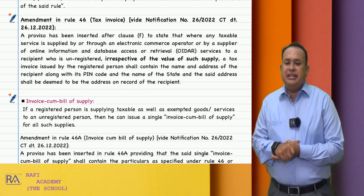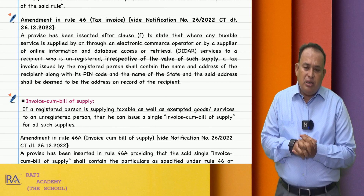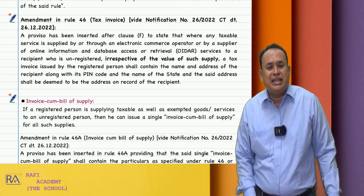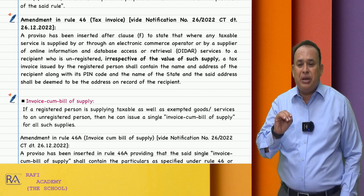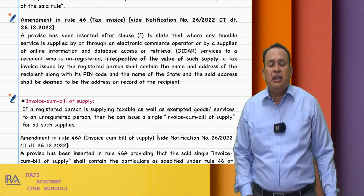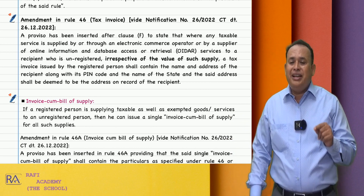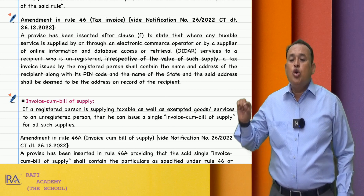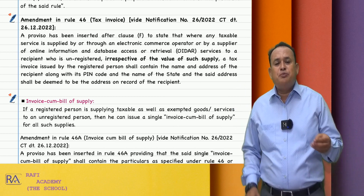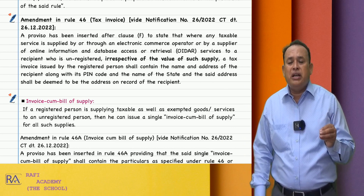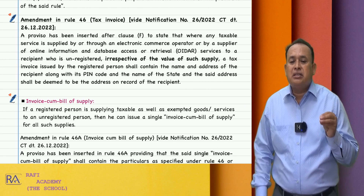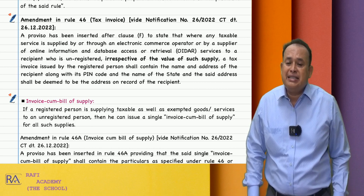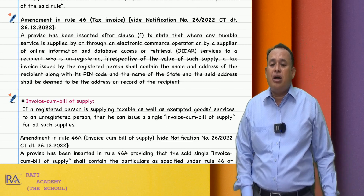Amendment in rule number 46 — tax invoice. What is this amendment? A proviso has been inserted after clause F of rule number 46 to state that where any taxable service is supplied by or through an electronic commerce operator (ECO) or by a supplier of Online Information Database Access or Retrieval services (OIDAR) to a recipient who is unregistered, then irrespective of the value of supply, a tax invoice issued by the registered person shall contain the name and address of the recipient along with the pin code and the name of the state, and the registered address shall be deemed to be the address on record of the recipient.